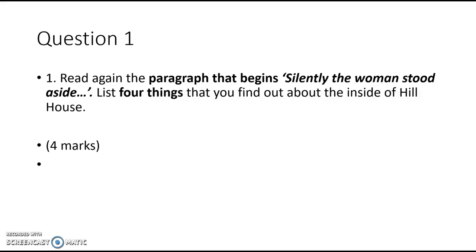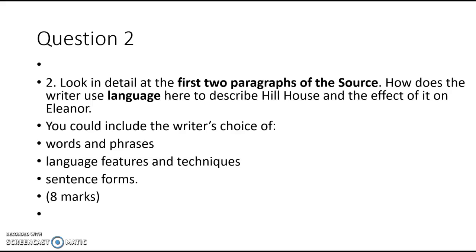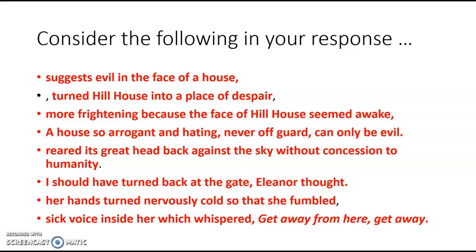Read again the paragraph that begins 'silently.' The woman's to decide and list four things — I'm not going to do that with you; you should be able to do that, but do it just for practice. Question two: look in detail at the first two paragraphs. How does the writer use language here to describe Hill House and the effect of it on Eleanor? Eight marks — you want to be looking at single words. So just some things you might want to consider — I would advise that you have a go at this question; there's nothing wrong with setting a timer to 12 minutes and having a go. So we've got 'suggests evil in the face of the house' — I mentioned that personification. 'Turned Hill House into a place of despair' — so abstract noun, despair.